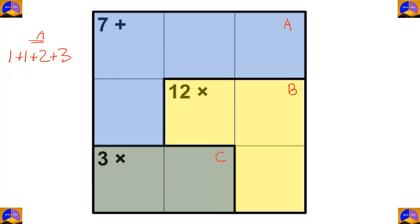In Cage B there are three cells and the operation is multiplication. After multiplying, our result must be twelve, so there is only one option, which is two times two times three. Now in Cage C there are two cells and the operation is multiplication. After multiplying, our result must be three, so the only option is three times one.